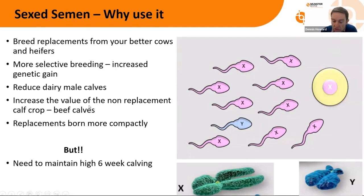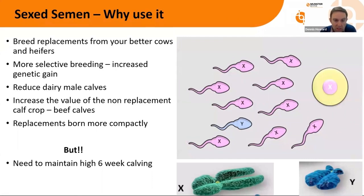You can use a selection of beef sires from the start — whether it's Charolais, Limousin, Belgian Blue, or more traditional breeds like Angus and Herefords — giving you a more saleable, more attractive beef calf crop. And because you're using your replacement sex straws early in the breeding season, your replacements will be born more compactly. This is really attractive; it makes management easier. You have a nice compact bunch of heifer calves that are going to be easier to manage and easier to get up to target weight the following breeding season.